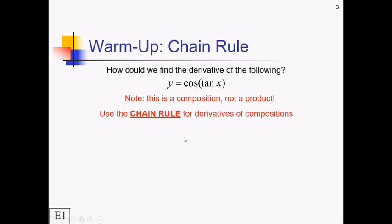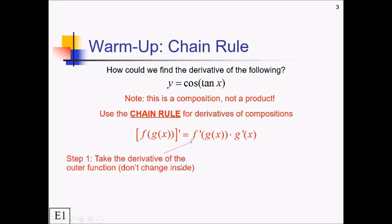For derivatives of compositions, if you're taking the derivative of f of g of x, we do the following: f prime of g of x times g prime of x. We're basically taking the derivative of the outer function with the inside function still in there unchanged. But then we're multiplying that by the derivative of the inner function, which I call the tail.